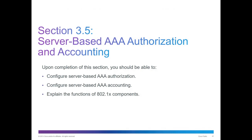Moving on, we have section 3.5 — server-based AAA authorization and accounting. When you're done with this, you should know how to configure AAA authorization and accounting. We're also going to cover 802.1x components. I say again because when you cover the CCNA material, you should have already talked about 802.1x and its components, but 802.1x on the LAN is drastically underused, and I know organizations that implement this technology totally wrong, so we're going to talk about those as we get deeper into this chapter.